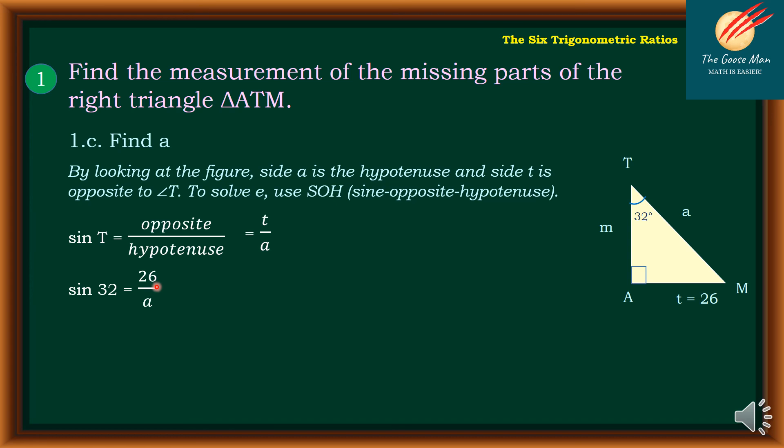If I multiply both sides of the equation by A, I'll come up with A sine 32 equals 26. And divide both sides of the equation by sine 32, so I'll come up with A equals 26 over sine 32. Using our scientific calculator, A equals 49.06 units.